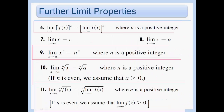Here are some further limit properties that pretty much follow as you'd expect. Let's talk about number seven — it looks tricky but is obvious. For example, the limit as x approaches 7 of 10: 10 is just a constant, so the answer is just 10. There's no variable, so we don't care what x is approaching. Number eight says something like: the limit as x approaches 5 of x is simply 5, because as x approaches 5, x approaches 5. Fairly obvious.